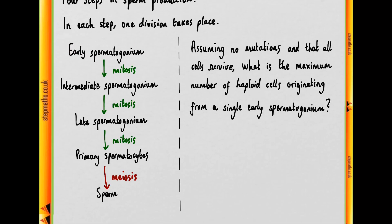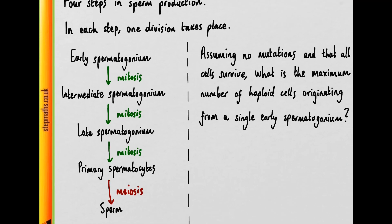Okay, so let's think about this early spermatogonium. It will be dividing into two, because mitosis involves generating two genetically identical daughter cells. So we'll have two intermediate spermatogonium for every early spermatogonium.